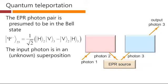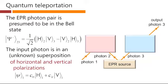The input photon is in an unknown superposition that we could write this way. So it's a superposition of horizontal and vertical polarizations with some coefficients here. But we don't know what those are, and we're not going to know what those are throughout this entire process.